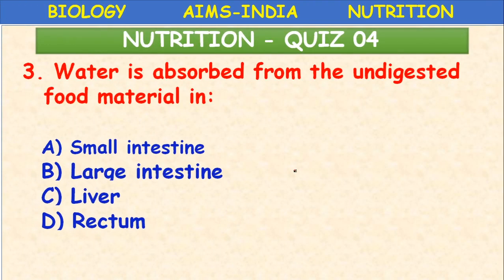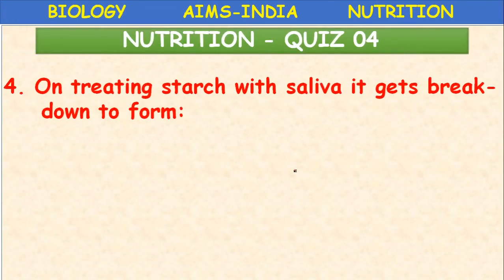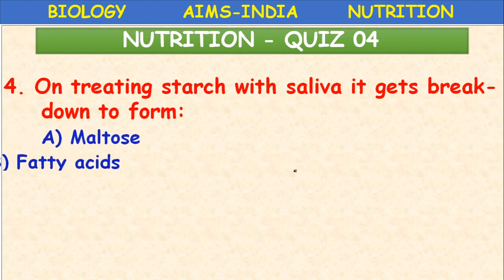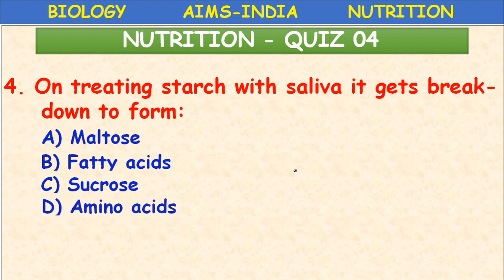Water is absorbed from undigested food material in the large intestine. On treating starch with saliva, it breaks down to form maltose — starch is converted into maltose and dextrins (disaccharides). Option A is correct.